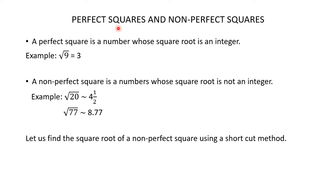Let's understand the difference between a perfect square and a non-perfect square. A perfect square is a number whose square root is an integer. For example, the square root of 9 is 3, so 9 is a perfect square. A non-perfect square is a number whose square root is not an integer. For example, the square root of 20 is approximately 4.5, and the square root of 77 is approximately 8.77, so both are non-perfect squares.